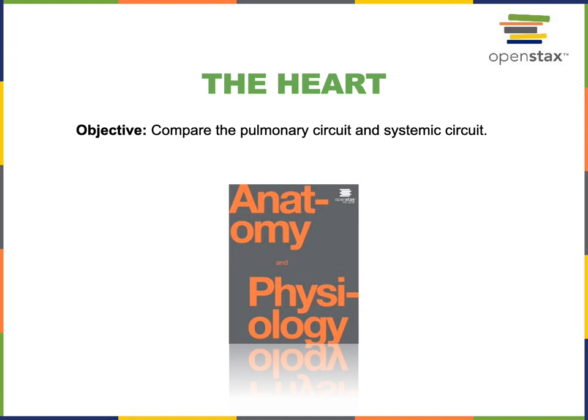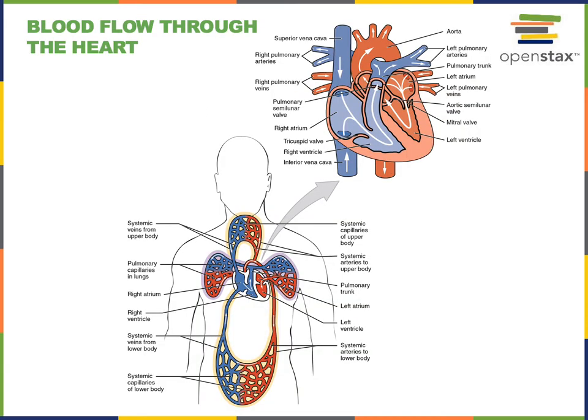This video will cover the following objective: compare the pulmonary circuit and the systemic circuit. The pulmonary circuit is a system of blood vessels carrying blood to and from the lungs, whereas the systemic circuit is a system of blood vessels carrying blood to and from the rest of the tissues in the body.